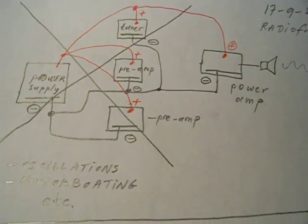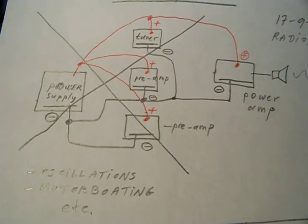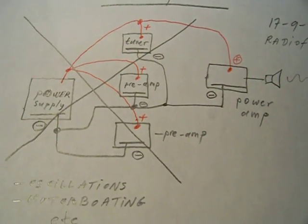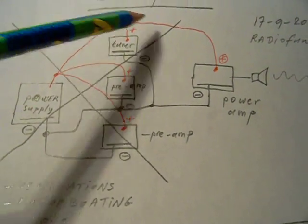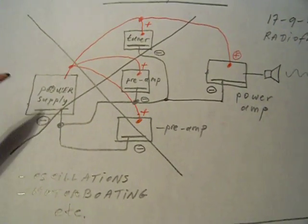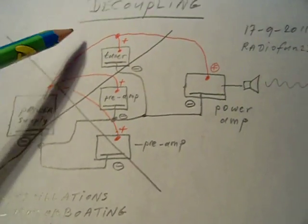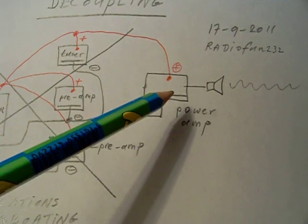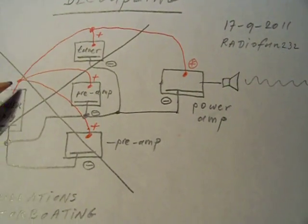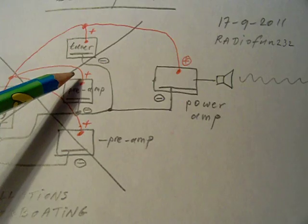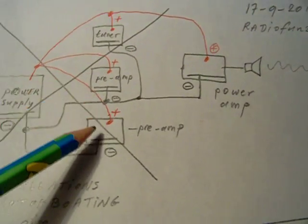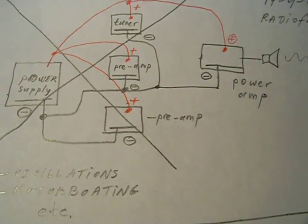And the bad way to do the wiring from the power supply to all these separate units is shown here. The plus wire goes here directly to the power amplifier. It's hooked up also directly to this preamplifier and to this preamplifier.